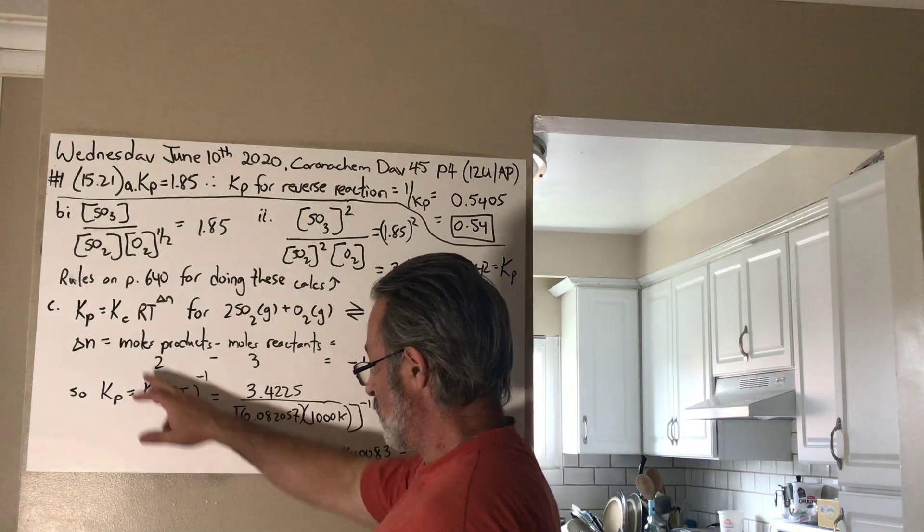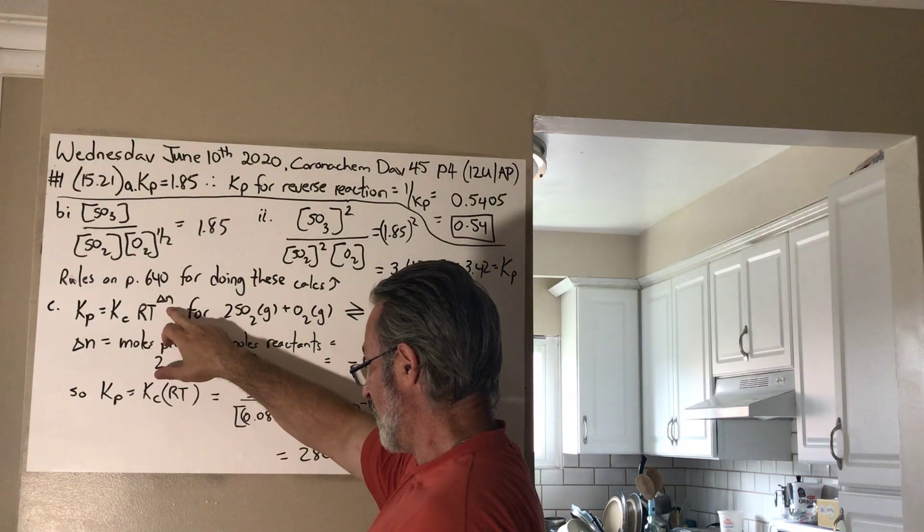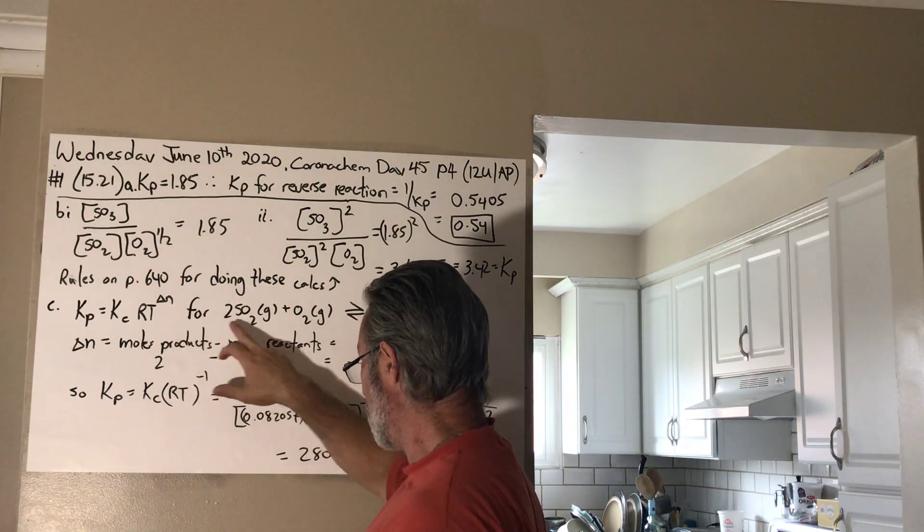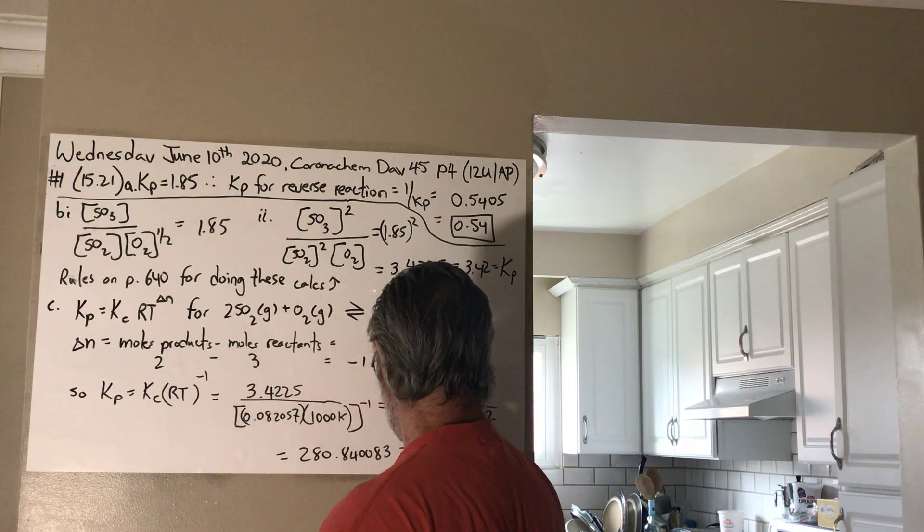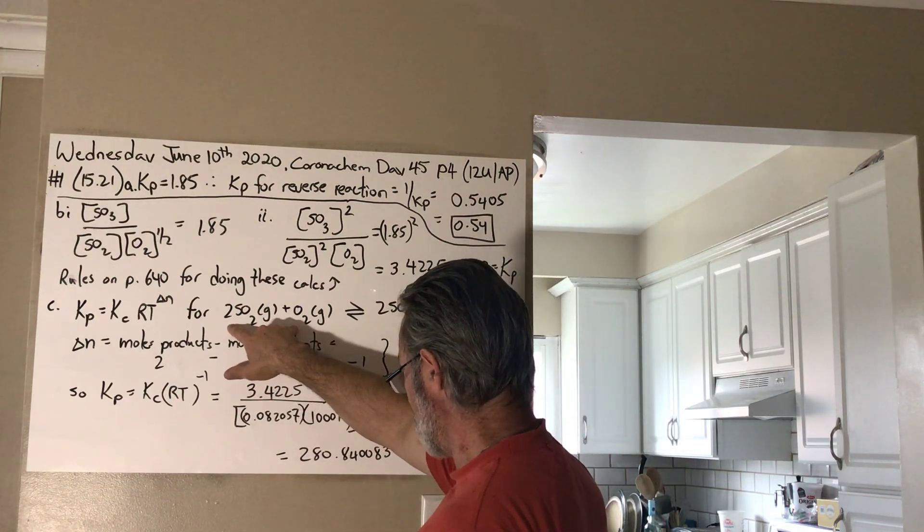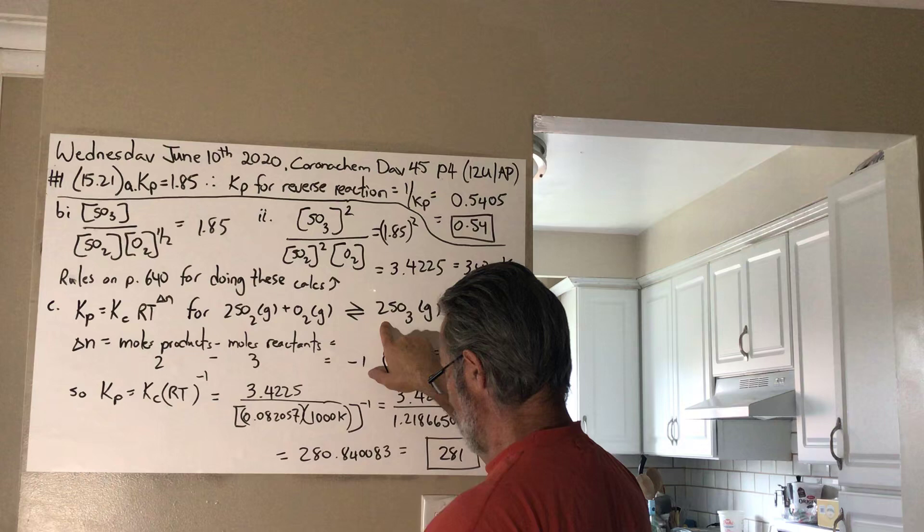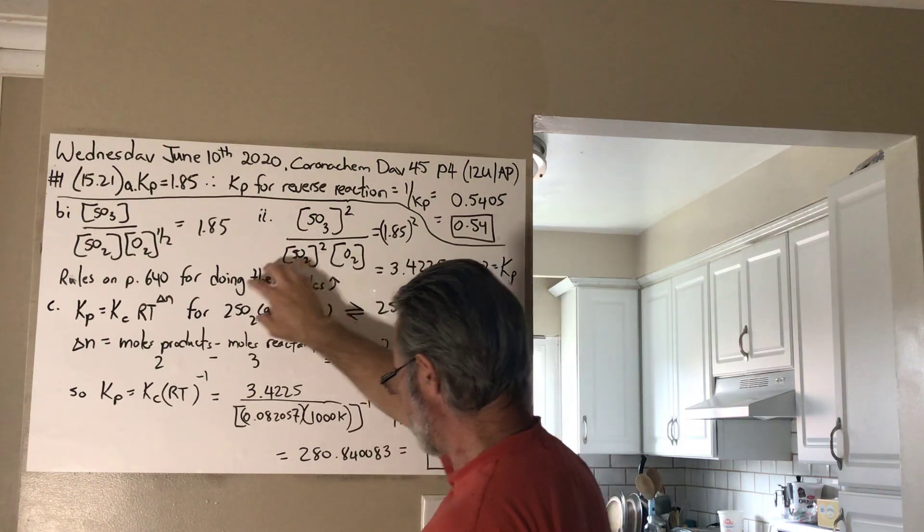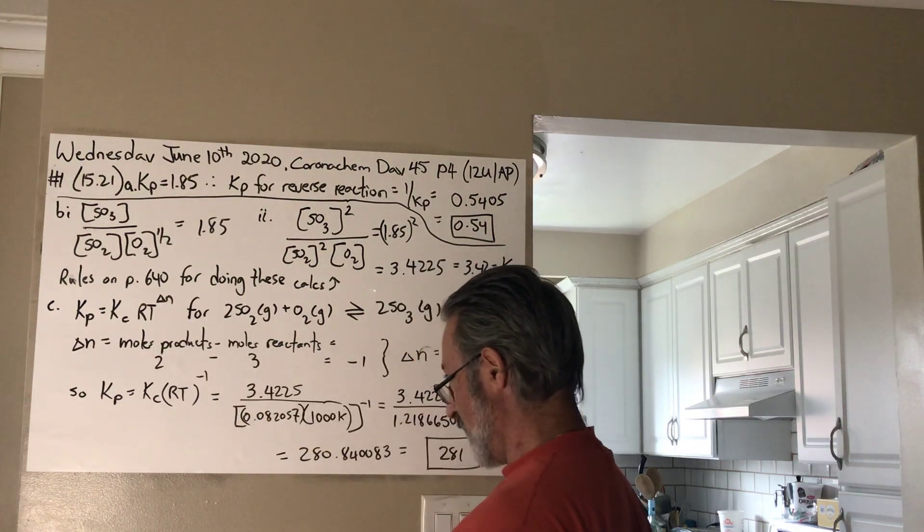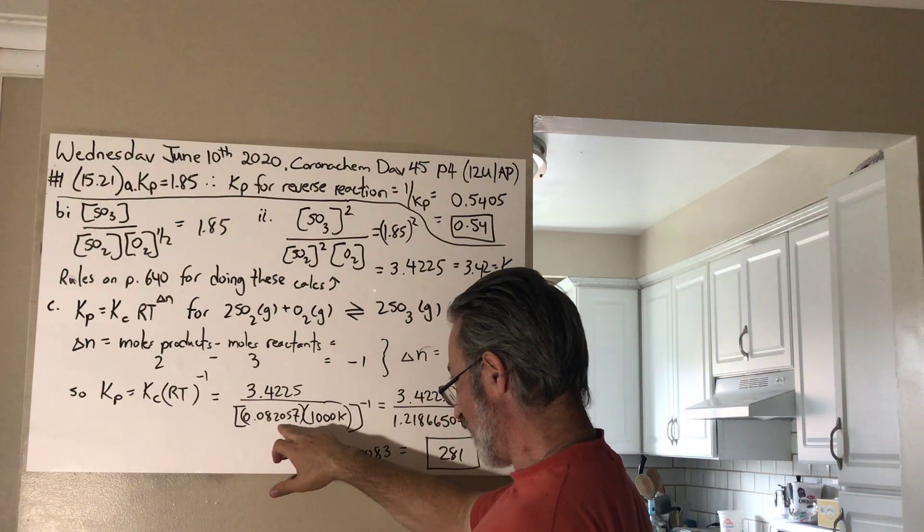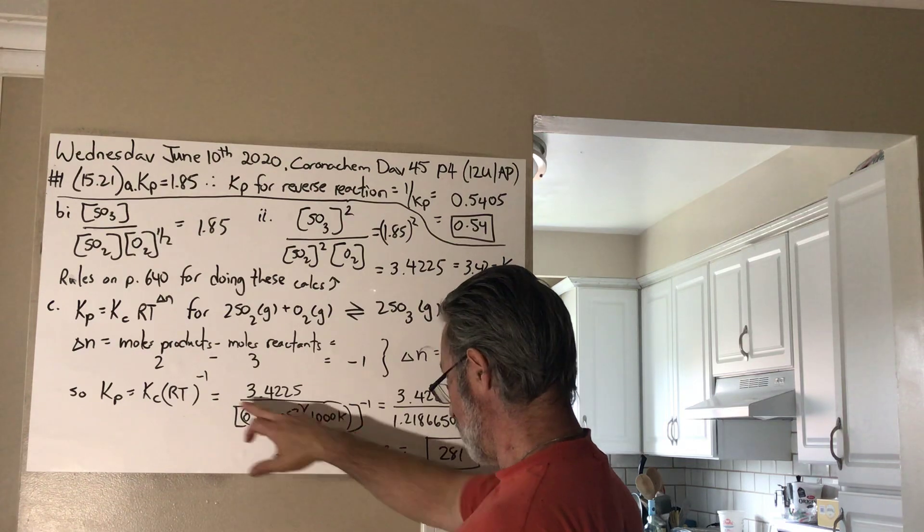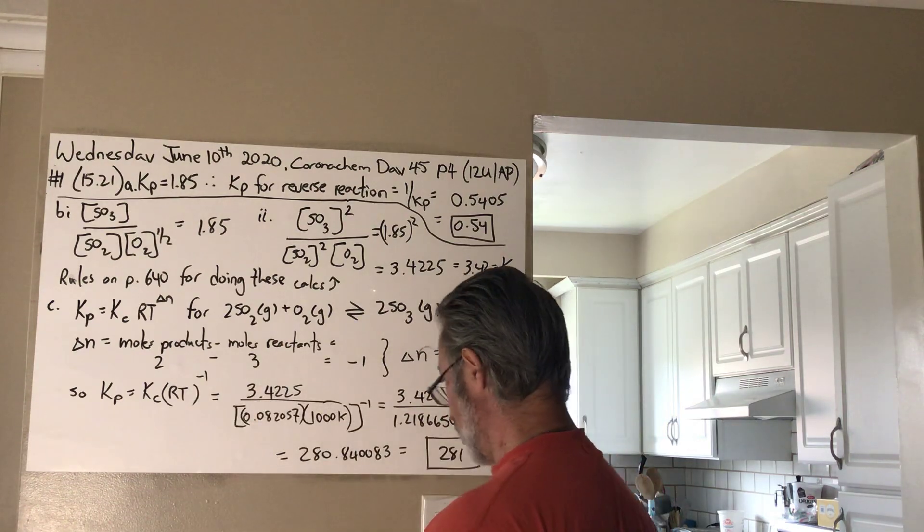So, KC is related to KP by RT to the delta n, where delta n is the change in the number of moles of participating substances. Everything is participating in this because it's a homogeneous reaction. Everything is in the gas phase. So, you have 3 moles of gas total turning into 2 moles of gas. Product minus reactants, 2 minus 3, gives you a negative 1. So, this number is to the power of negative 1.